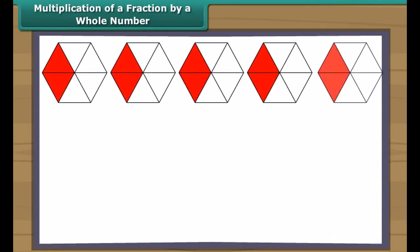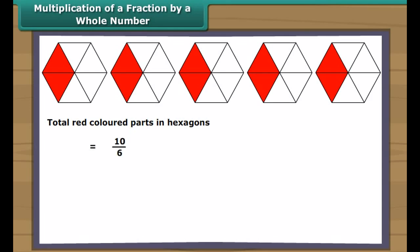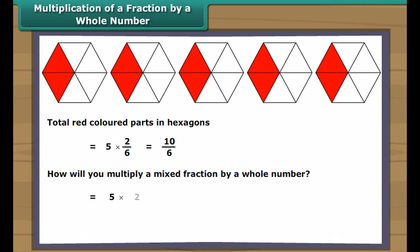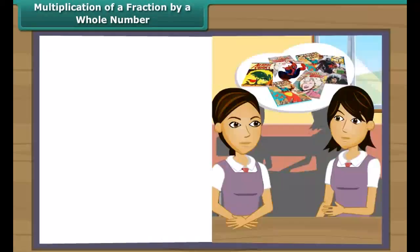Multiplication of a fraction by a whole number: look at these hexagons and find out the total red-colored part. Two-sixths of each hexagon is red, so in total we have ten-sixths part red. We can also find this by multiplying 5 by two-sixths. To multiply a whole number with a proper or improper fraction, we multiply the whole number with the numerator, keeping the denominator the same. To multiply a mixed fraction by a whole number, first convert the mixed fraction to an improper fraction, then carry out the multiplication.